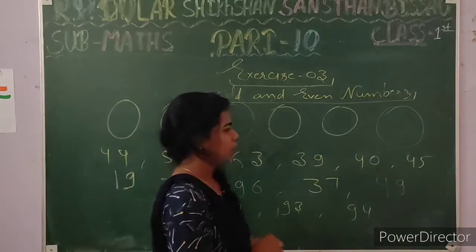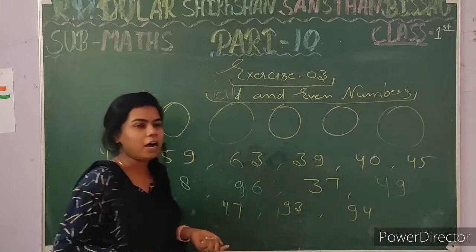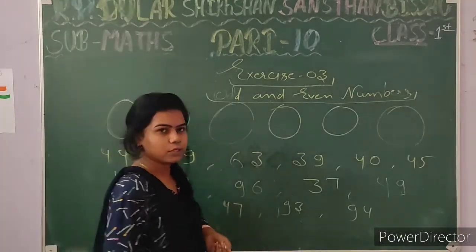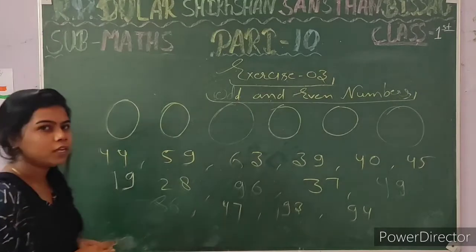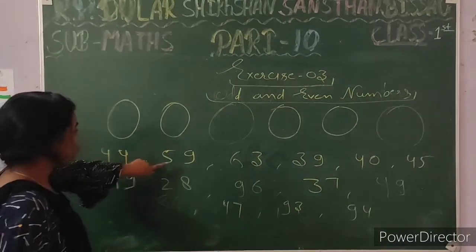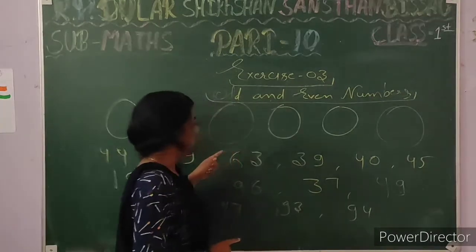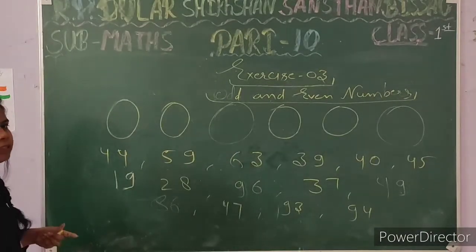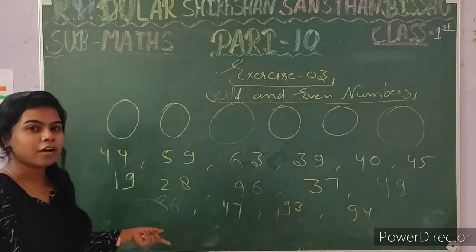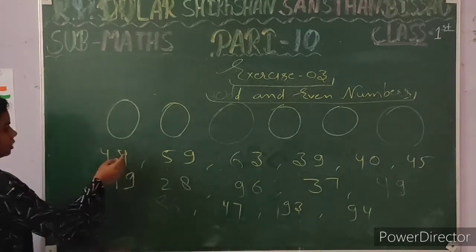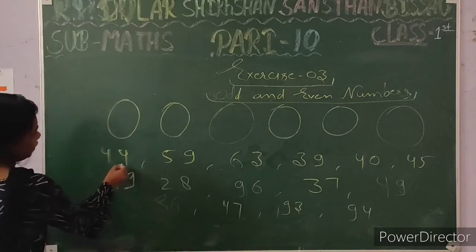Your third question is to recognize and encircle the even numbers. How can you recognize which ones are even numbers in this list? We draw a circle on the even numbers. Students, look carefully — if the ones digit of any number is 0, 2, 4, 6, or 8, then that number is called an even number. So here we only encircle the even numbers, not the odd numbers.